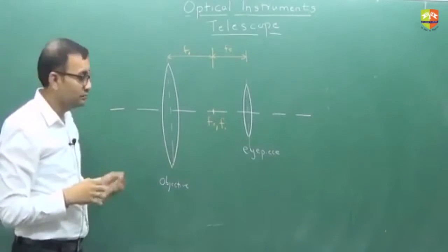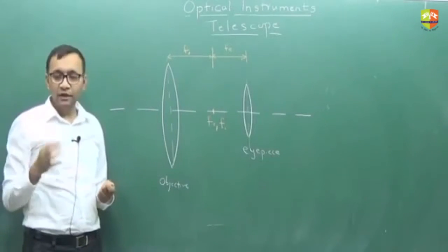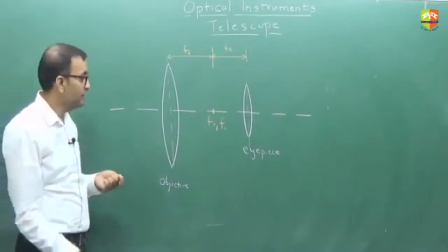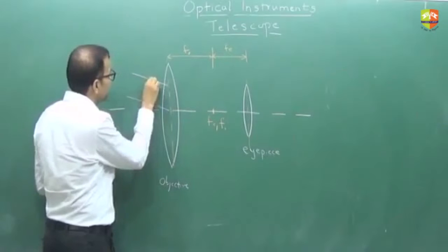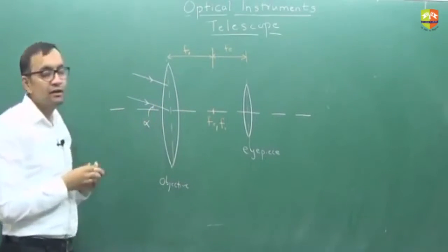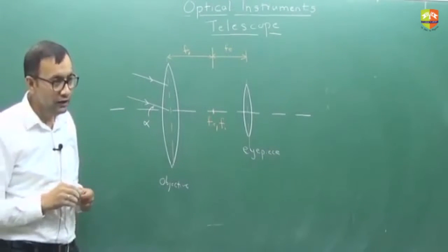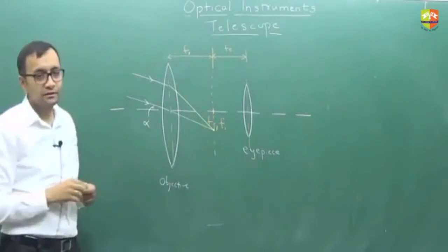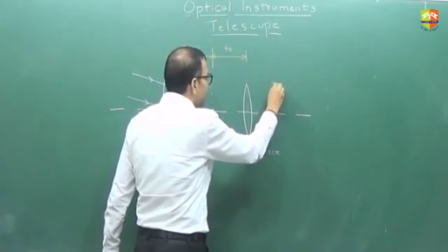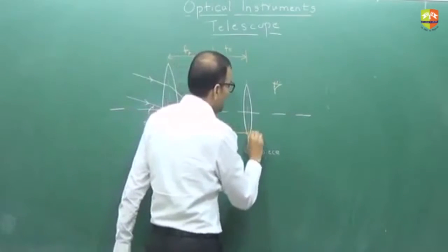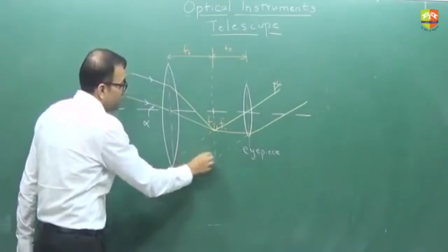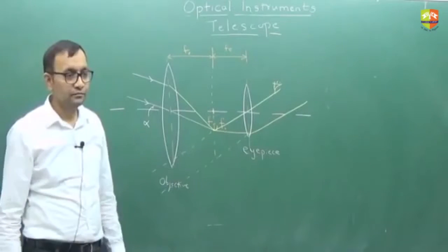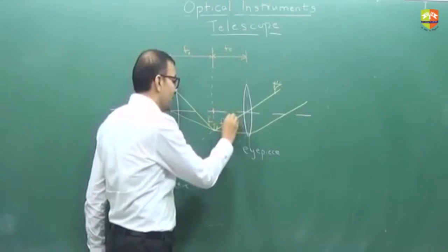Now how the rays will come towards the telescope — there will be parallel rays because they are coming from infinity. These parallel rays need not be parallel to the principal axis but they should be parallel to each other. Suppose rays are coming at angle alpha. They will converge at focal length, forming an intermediate image. The final image will be formed at infinity. The first image gets formed at the focal length of the eyepiece itself. Let us say that angle is beta.